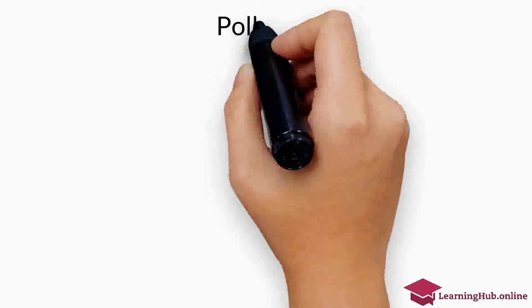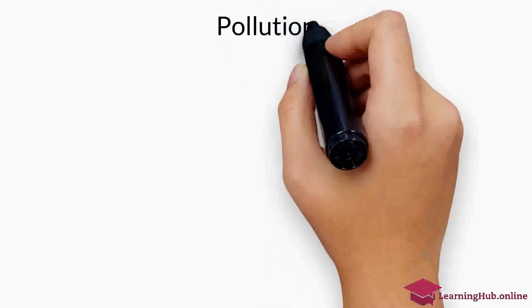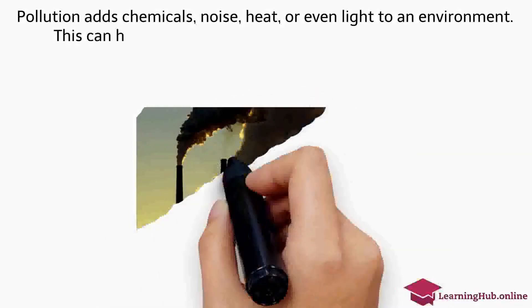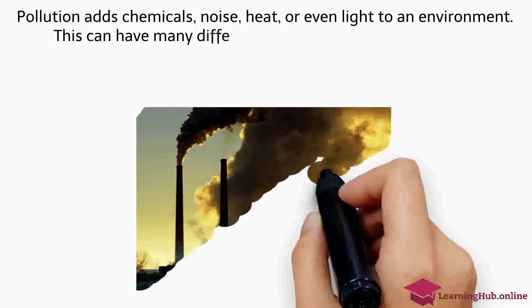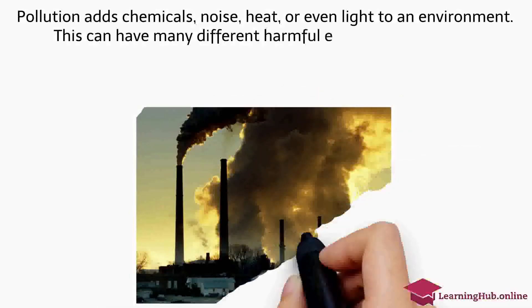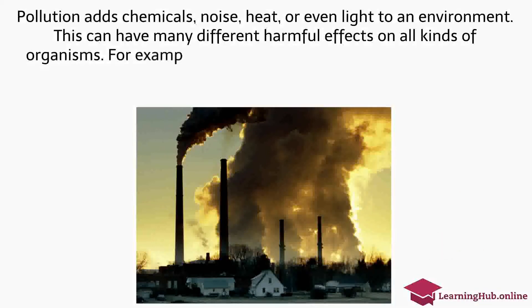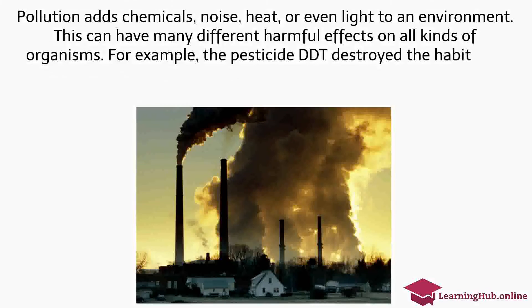Pollution. Pollution adds chemicals, noise, heat, or even light to an environment. This can have many different harmful effects on all kinds of organisms. For example, the pesticide DDT destroyed the habitat of the peregrine falcon.